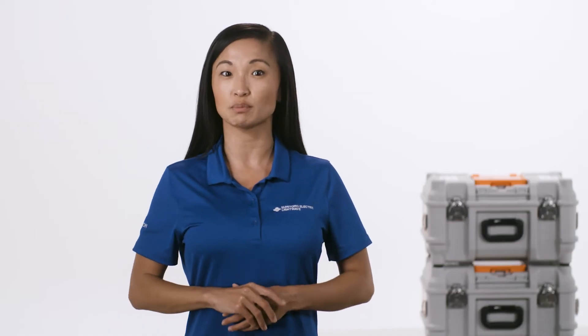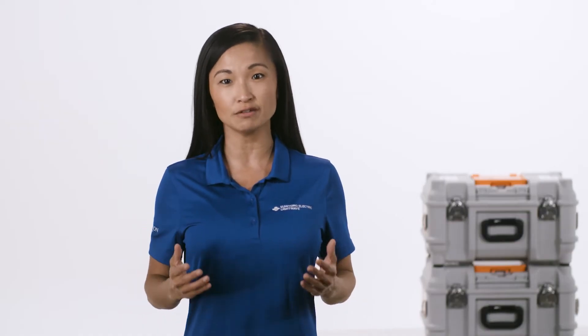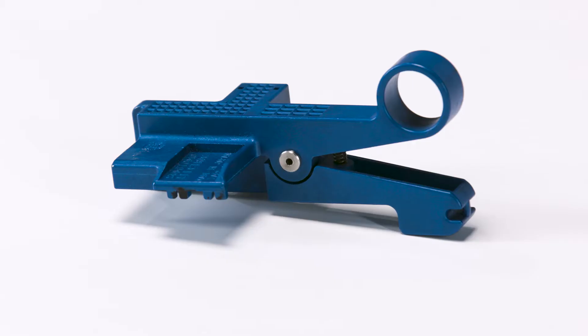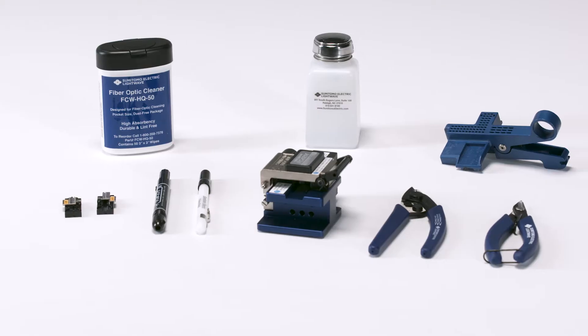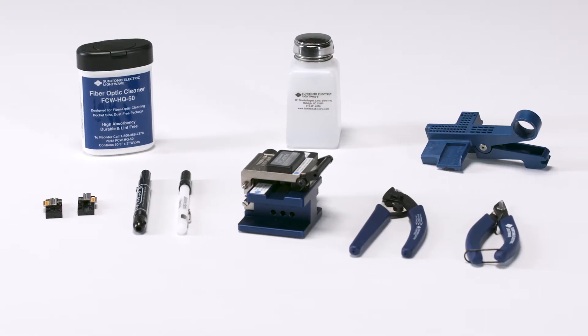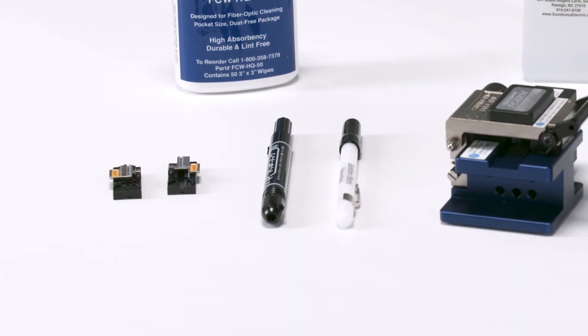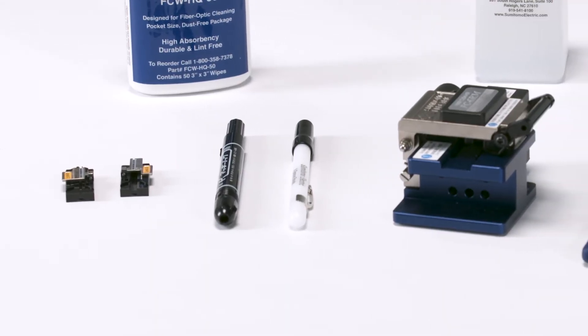Use Sumitomo Electric's supplied tools for cordage and fiber splicing preparation: cord tool, Kevlar shears, stripper, glass cleaning fluid, single fiber left side holder, single fiber ferrule holder, and cleaver.